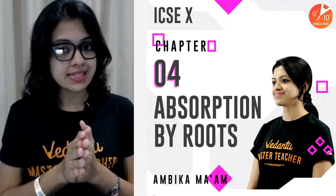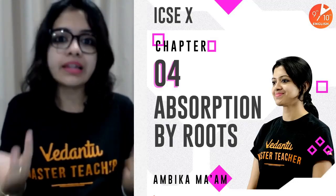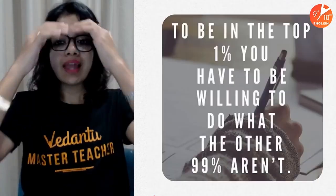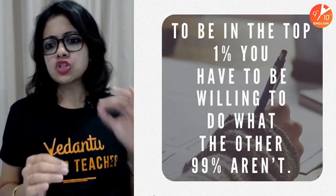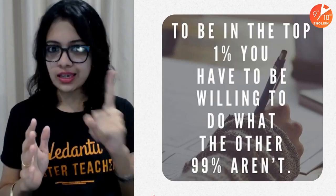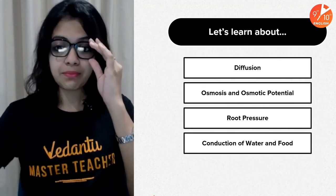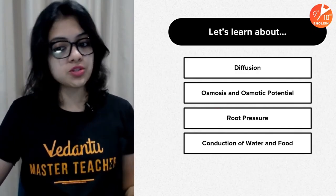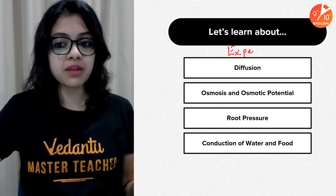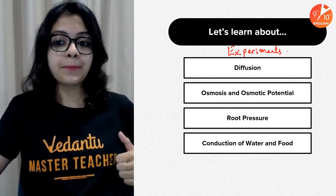Today will be the last concept-level session for this particular chapter, and then we just have two more plant physiology chapters remaining. Let us start with an inspirational quote: remember, to be in the top 1% you have to be willing to do what the other 99% aren't. Today we will learn about diffusion, osmosis and osmotic potential, root pressure, and the experiments related to conduction of water and food in plants.